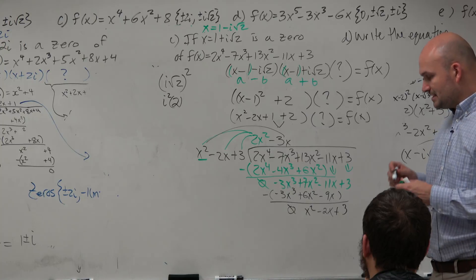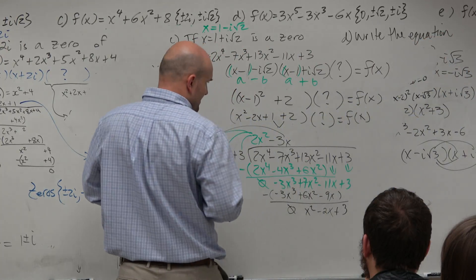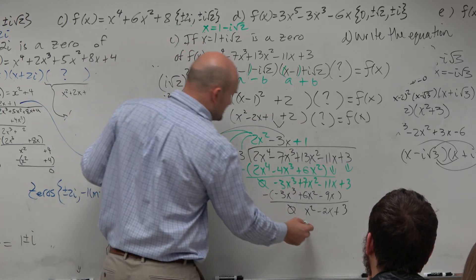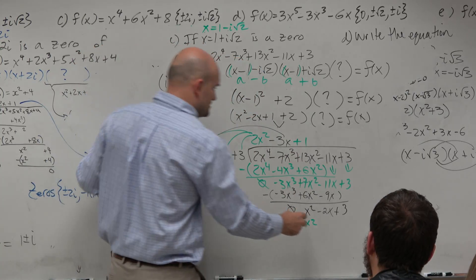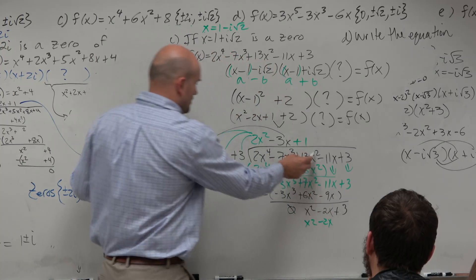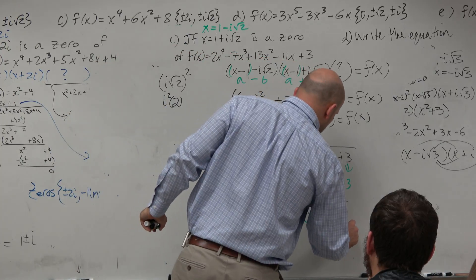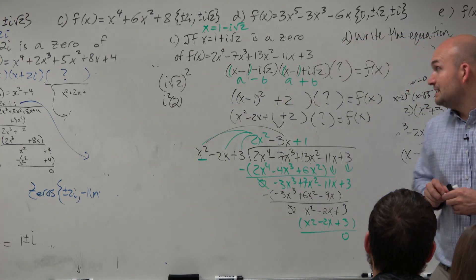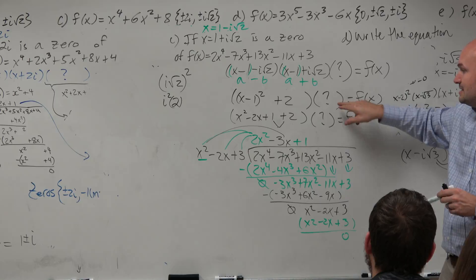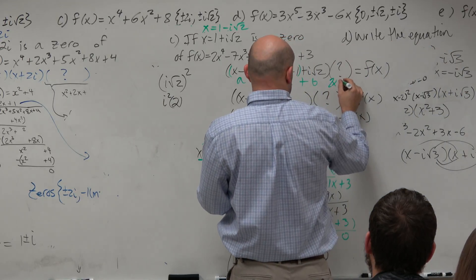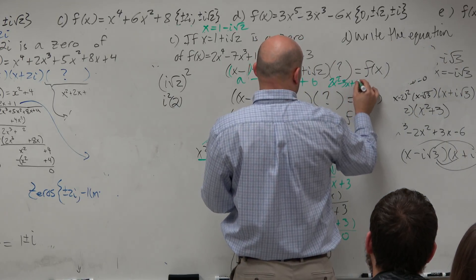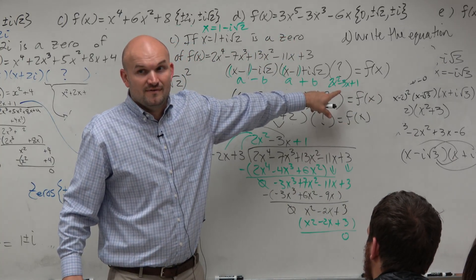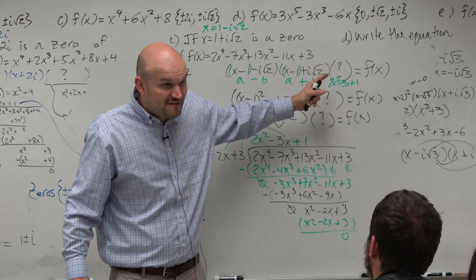All right, last round. How many times is x squared divided into x squared? 1. 1 times x squared is x squared. 1 times negative 2x is a negative 2x. 1 times 3 is a positive 3. Subtract my rows. And I get a remainder of 0. So what that means is this times 2x squared minus 3x plus 1 equals f of x. So what does that tell us about this? It's a factor. It's a factor of the polynomial.